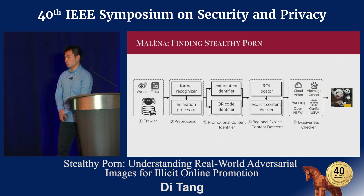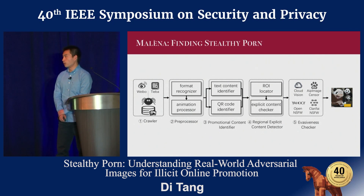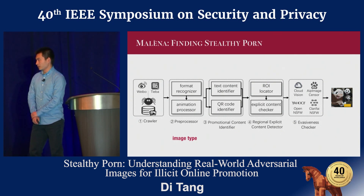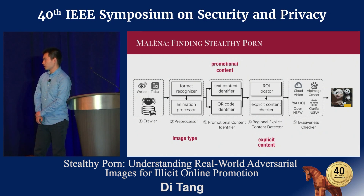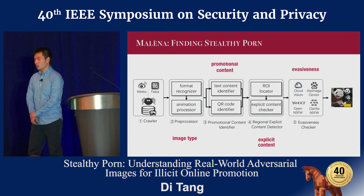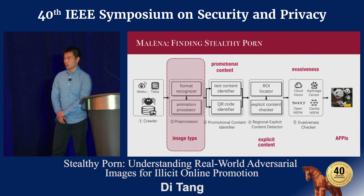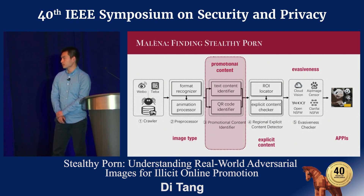According to these two characteristics, we designed a new method to detect them called MENINA. MENINA contains four sequential components: a pre-processor, a promotional content identifier, a regional illicit content detector, and an evasiveness checker. If an image passes all four, we recognize it as an EPI. The pre-processor identifies the image type and expands GIF files into separate pictures.